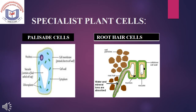Specialist Plant Cells — Palisade cells and root hair cells. Palisade cells have a nucleus, cell wall, chloroplast and vacuole. Palisade cells are mostly found on the top surface of leaves. Root hair cells have a nucleus but do not have a chloroplast. Their job is to draw in water and mineral salts from the soil.